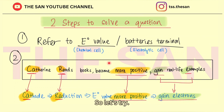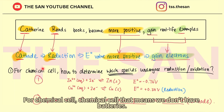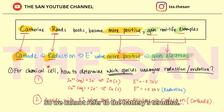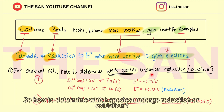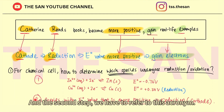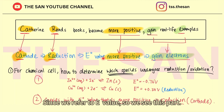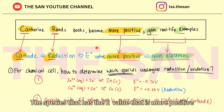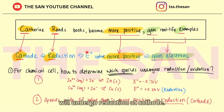Let's try a chemical cell example. Chemical cell means we don't have a battery, so we cannot refer to the battery terminal. Instead, we refer to the E0 value. To determine which species undergoes reduction or oxidation: step one, refer to E0 value; step two, refer to the acronym. The species with the more positive E0 value undergoes reduction at cathode. We compare the two E0 values — the more positive one undergoes reduction.